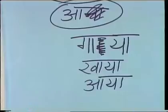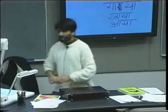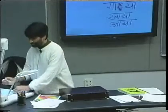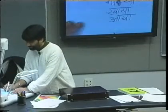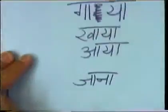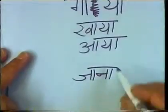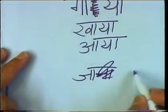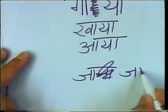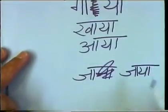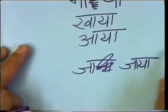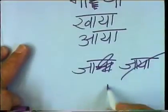In Hindi, only one verb is irregular: 'jana'. For 'jana', it should technically be 'jaya', but we don't say that — we say 'gaya'.